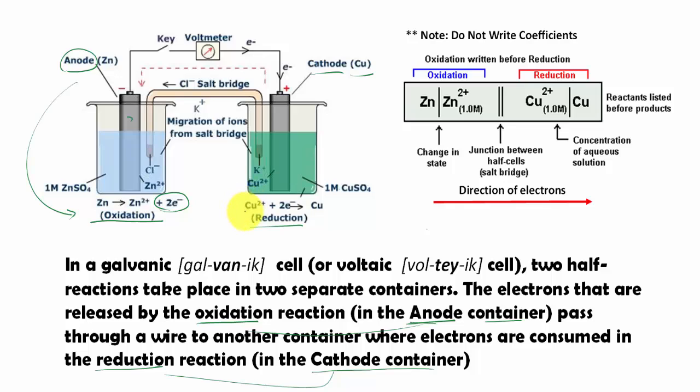So here we have the reduction half reaction, which copper gained the electron to become copper solid. Eventually you will have more copper being added to this metal cathode. And between it, you have the salt bridge.